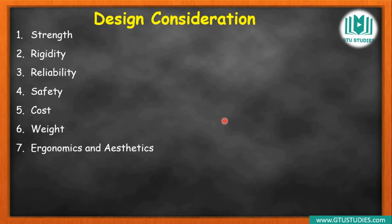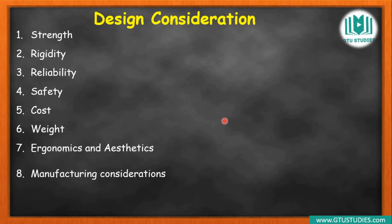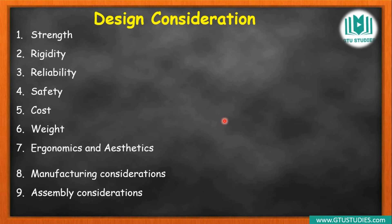Ergonomics and aesthetic behavior — these will be explained in detail in the next video. Ergonomics means human comfort — how the user can best use it. Aesthetics means how attractive it looks. Next, manufacturing consideration — how many parts there are, how they are made, and whether they can be assembled — all these will be explained in detail. Assembly consideration means bringing parts together; if parts cannot be joined, assembly cannot happen, so design accordingly from the beginning.